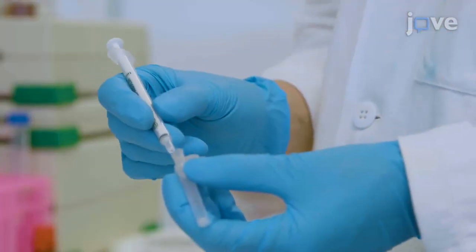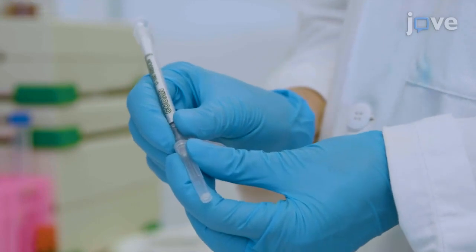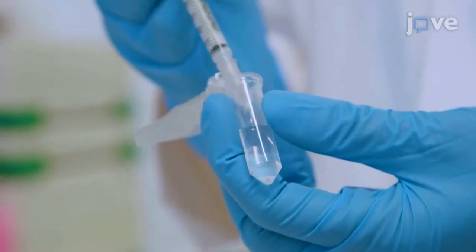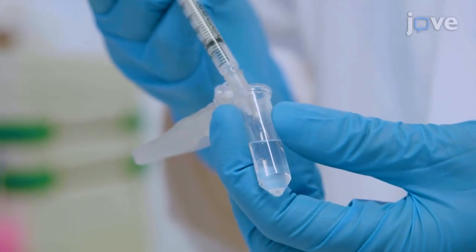To fill an ISCA, attach a 27 gauge needle to a 1 milliliter syringe and load one syringe for each concentration of the filtered chemoattractant.